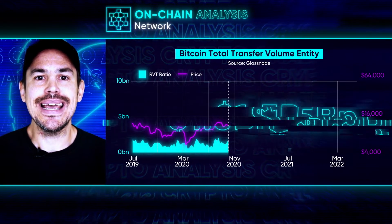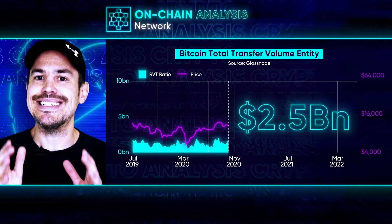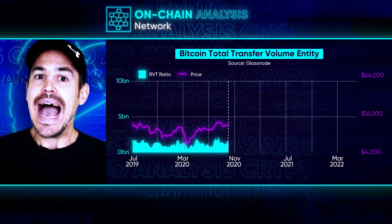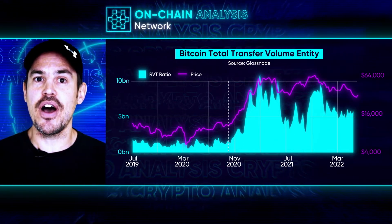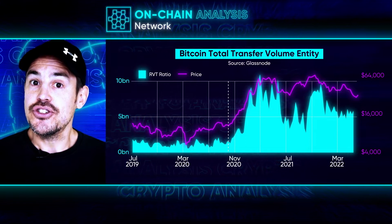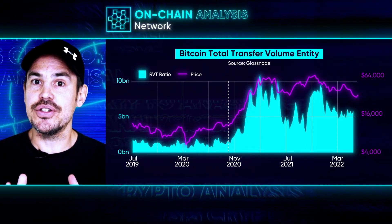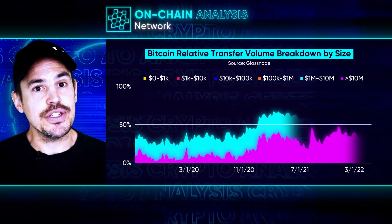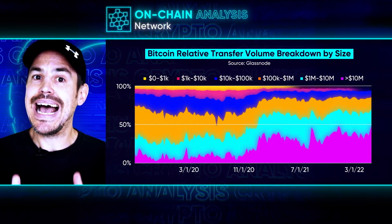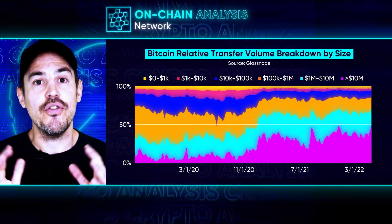On-chain also allows us to look at the network as a whole and see how it's being used and changing over time. Here we review the total transfer volume, which shows us how much Bitcoin is moving across the network each day. Before October 2020, we had between $1.5 billion and $2.5 billion moving each day. However, that has grown significantly and is now between $5.5 and $7 billion per day. So on average over the last 18 months, the network usage of Bitcoin has tripled. Alongside the increase in volume, we also see the number of transactions that cross $10 million has grown from 10% to 40% of all transactions.